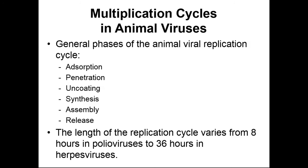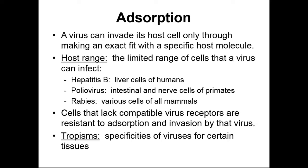Let's look at step number one: absorption. We need to get the virion particle into the host cell. In absorption, it binds to the extracellular matrix of the host cell. The spike that sticks out from the virus — the receptors on the virus — make contact, kind of like a lock-and-key model, like enzymes and their substrates.